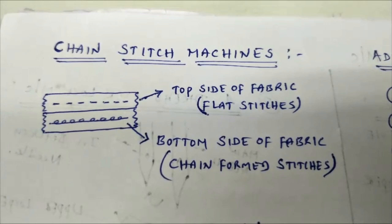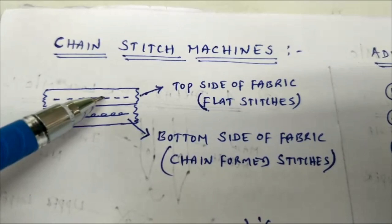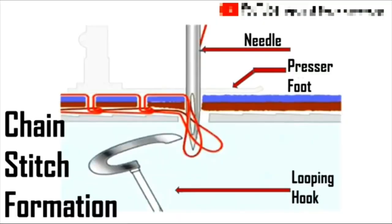In chain stitch machine, after sewing on fabric, we get stitches like this. At the top of the fabric, we get flat stitches. At the top side of the fabric, we get flat stitches and at the bottom of the fabric we get chain formation of stitches.